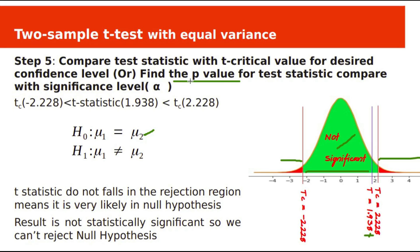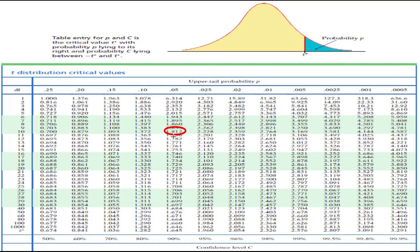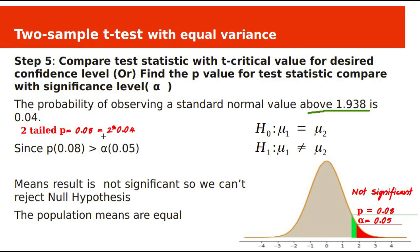Let's also check using the p-value approach. Finding the p-value for t-statistic 1.938 in the t-table, 1.938 is close to 1.812 for 10 degrees of freedom, giving an approximate one-tail p-value of 0.04. Since it is a two-tail test, we multiply by 2 to get a two-tail p-value of 0.08. Since p-value 0.08 is greater than alpha 0.05, the result is not significant and we cannot reject the null hypothesis — population means are equal.